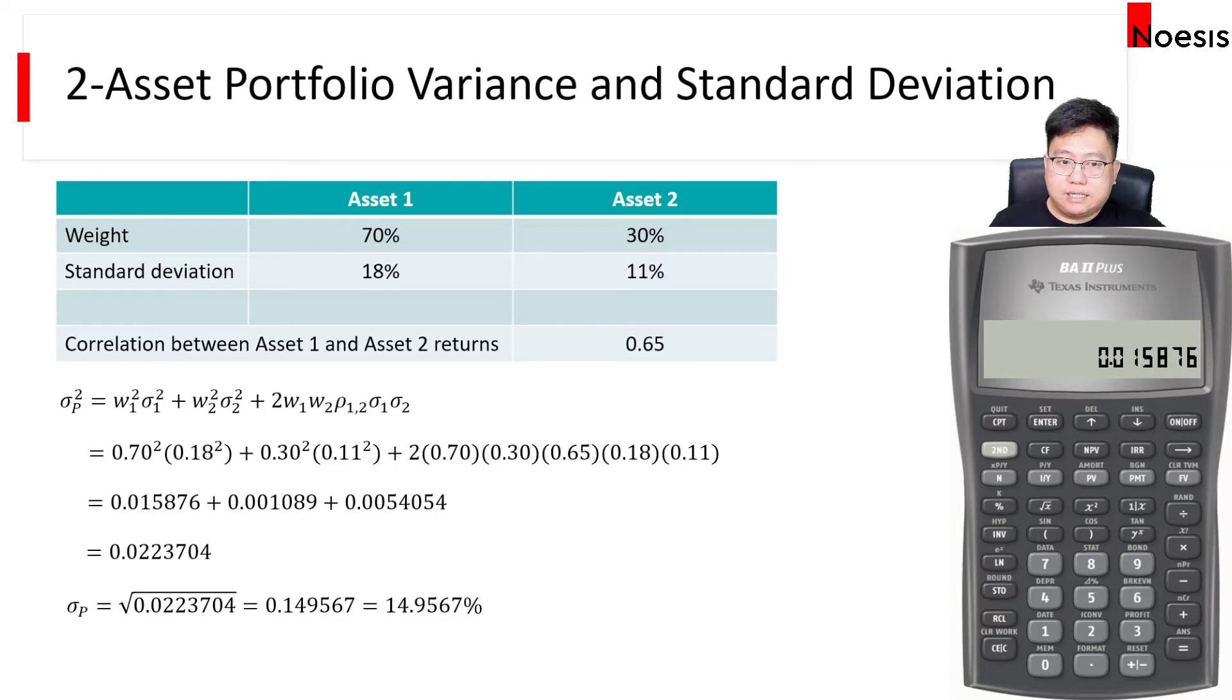Now, the next one that I'll go to is the second one, which is 0.3 times 0.11, and then square that. So I'll get 0.001089. I will now store this into button 2. So I'll press store 2.